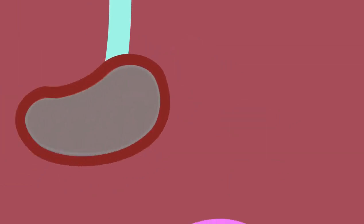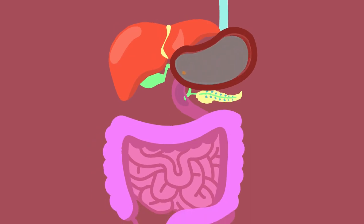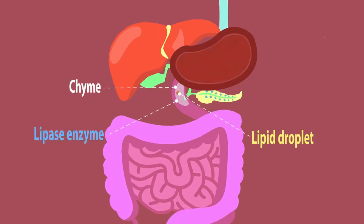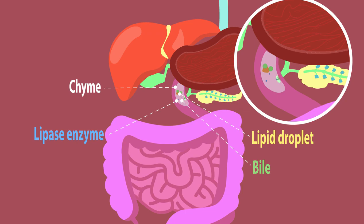The lipase enzymes are added in the small intestine. At the same time, a special substance called bile is also added to the chyme.